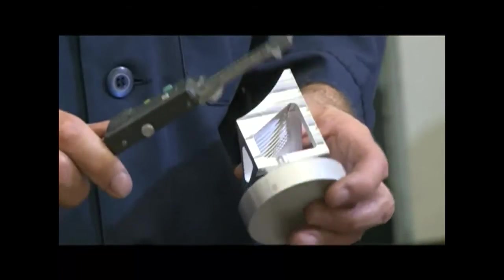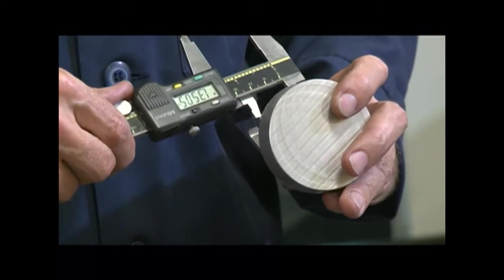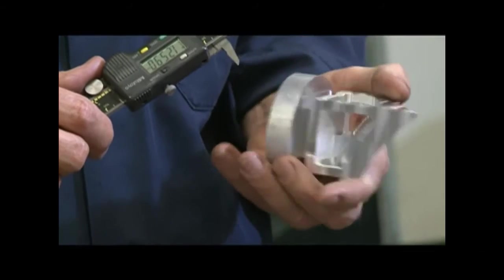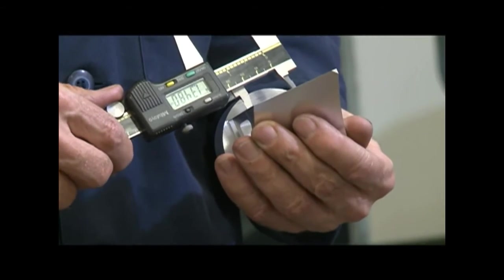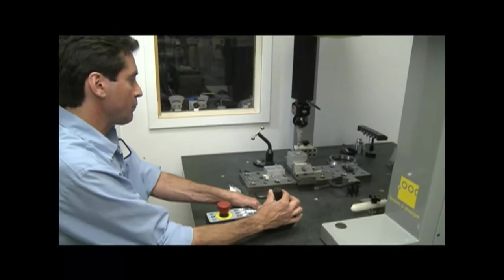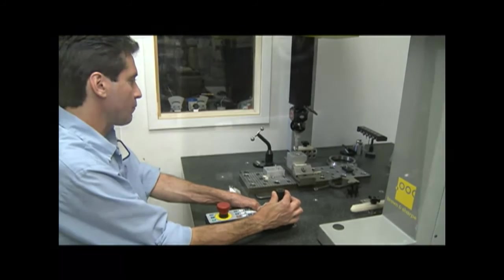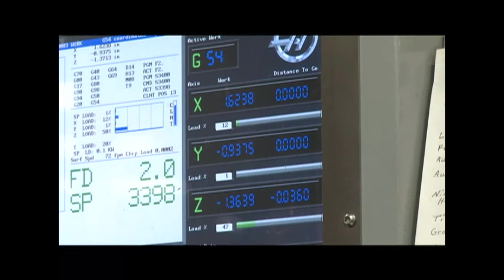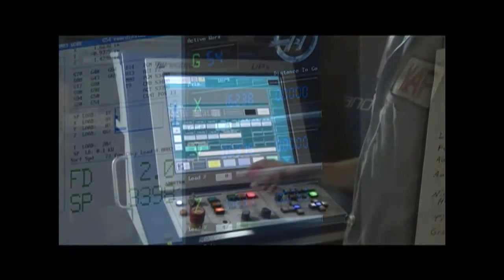Every part undergoes a thorough inspection. We utilize a fine collection of the very latest inspection tools on either the shop floor or at our inspection lab. We have multiple CNC coordinate measuring machines, video coordinate measuring machines, and circular geometry measuring machines.